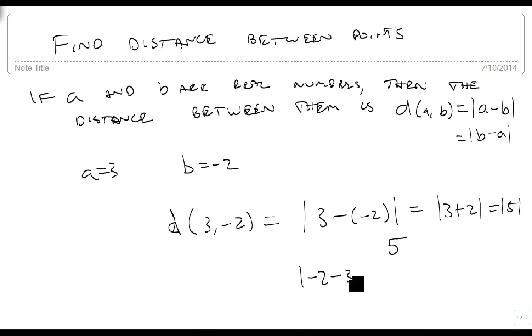And notice if I did this the other way, negative 2 minus 3 is the absolute value of negative 5, which is also 5. So no matter which way I do it, I get 5.